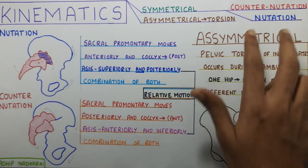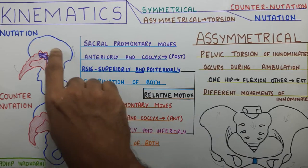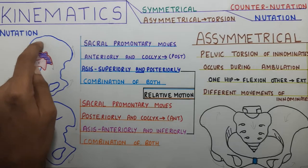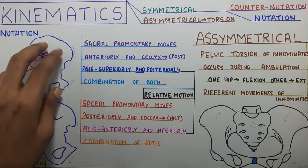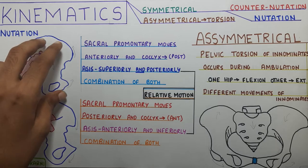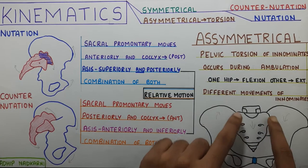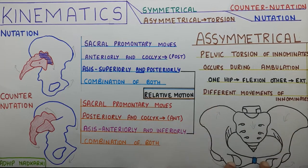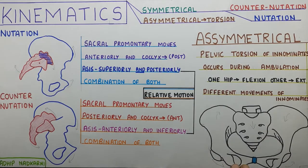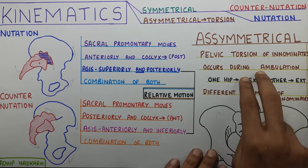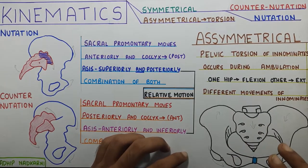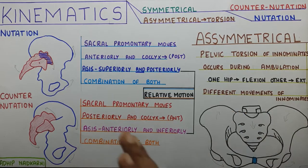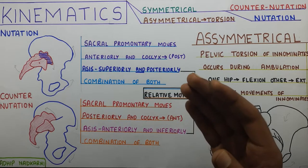So first, nutation. What is happening in nutation involves this space you can see between the sacrum and the bone of your pelvis — that is your innominate bone. Now, why do I call it the innominate bone? The pelvis is formed by these two bones and the sacrum. These two bones don't have a name as such; together it's called the pelvis, but if you take out the sacrum, these two bones don't have a name — so they are called the innominate bones. I'll be using this term throughout the video, so get familiar with it.